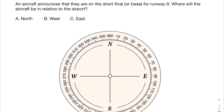We're back with another airport operations Part 107 test prep video. In this video we're going to be going over two practice problems. Let's start off with the first one: an aircraft announces that they are on the short final or base for runway nine — where will the aircraft be in relation to the airport?